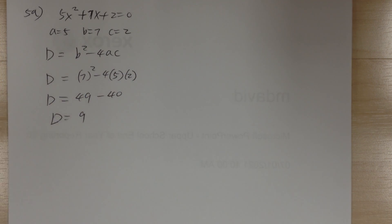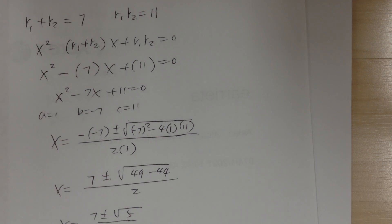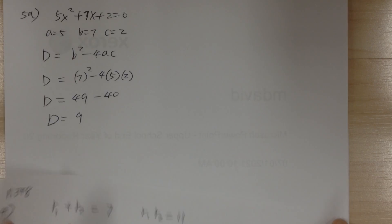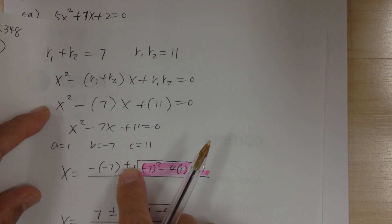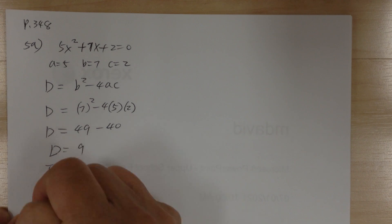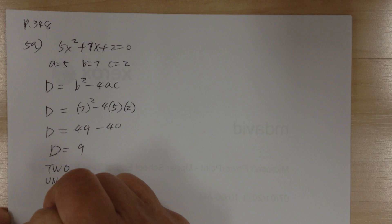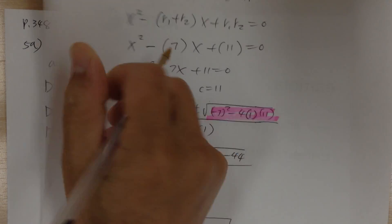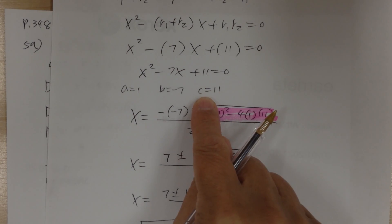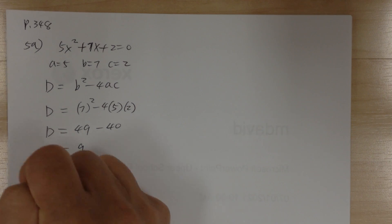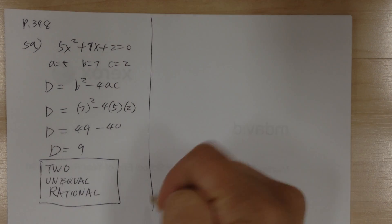The discriminant d = 9 is the inside part of the square root in the quadratic formula. Since d is positive, you get two real unequal roots. Because d = 9 is a perfect square, you can take out the square root cleanly, so the roots are rational — two unequal rational roots.